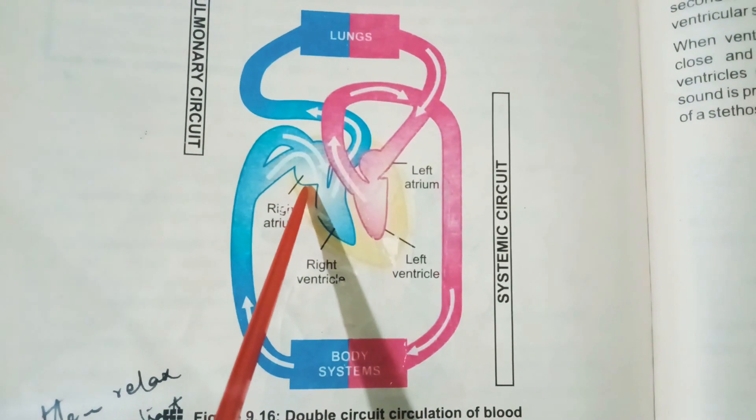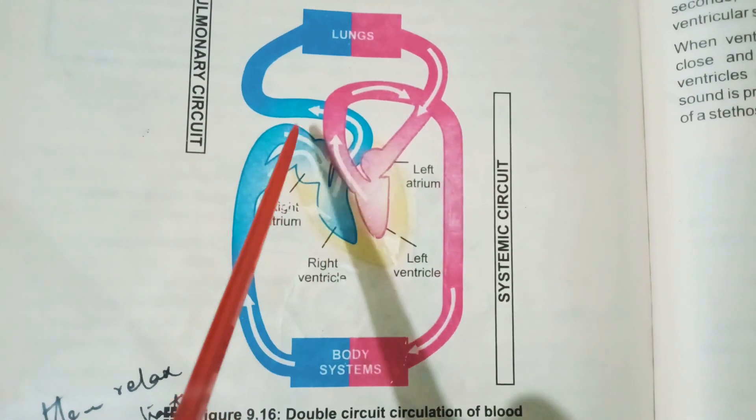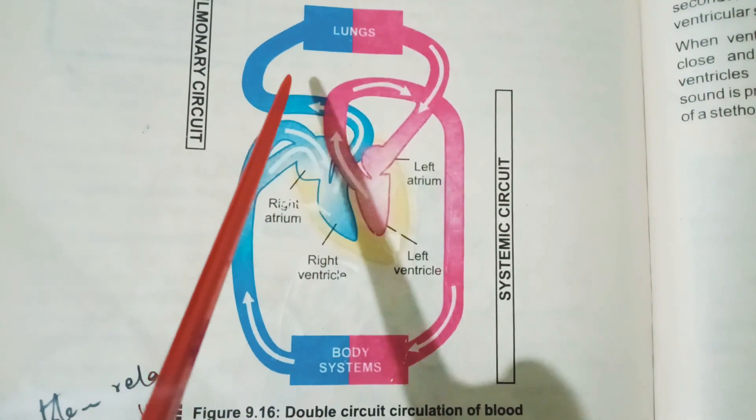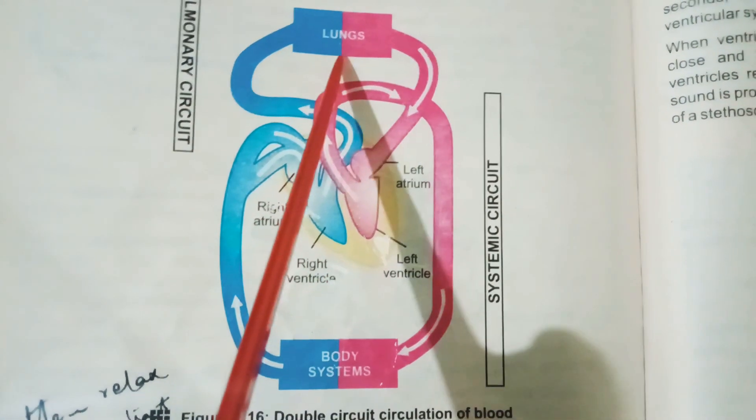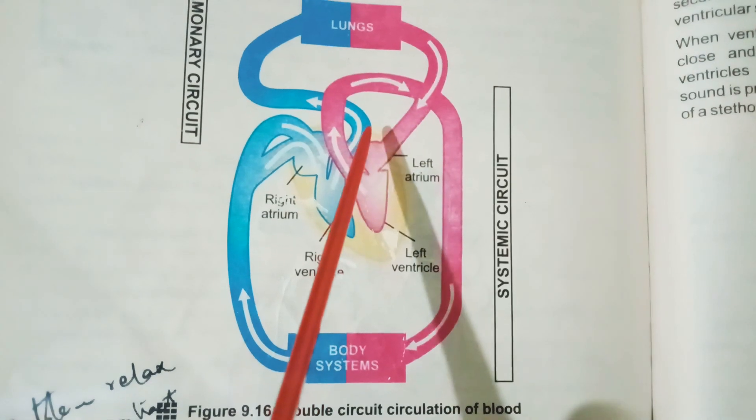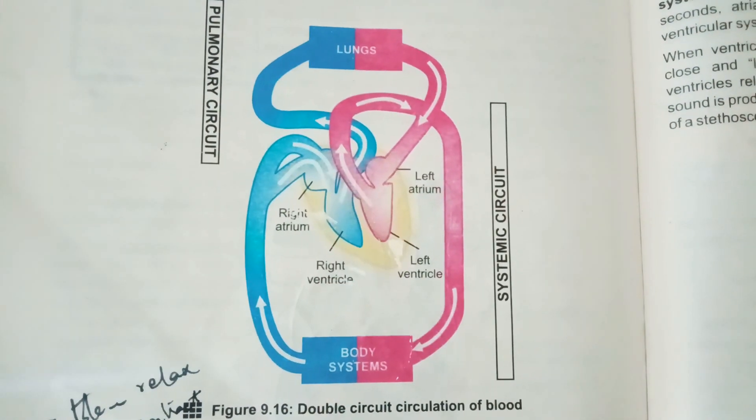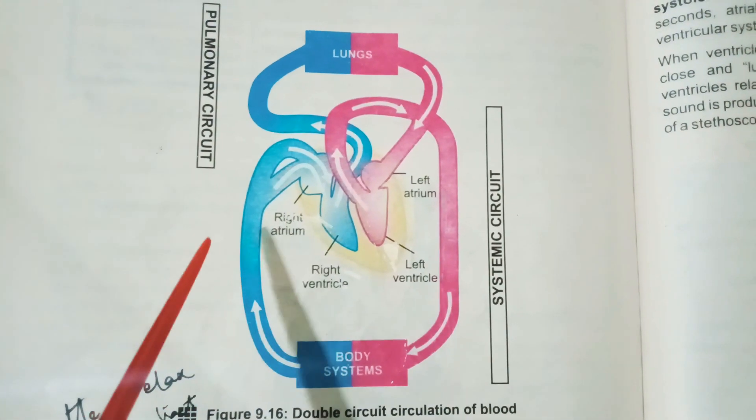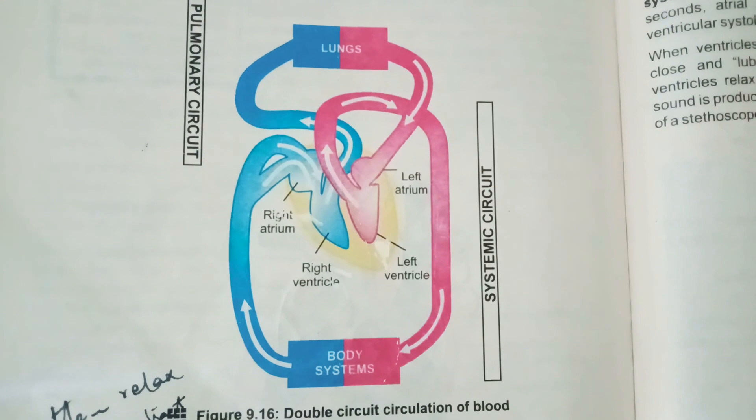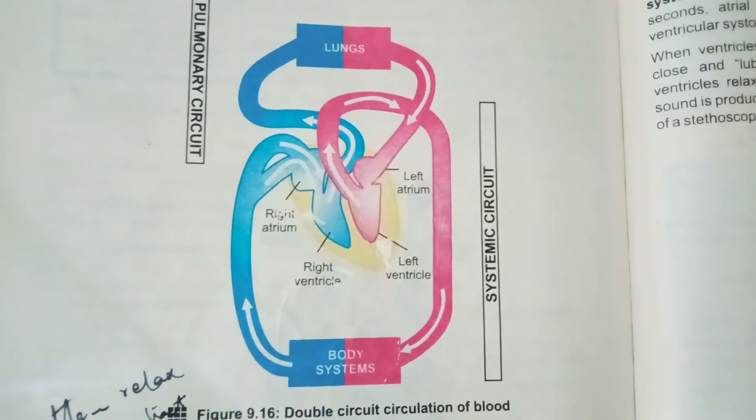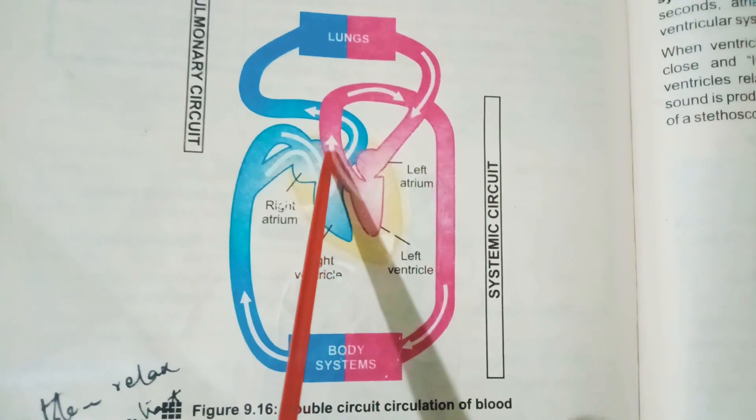The pathway on which deoxygenated blood is carried from the heart to the lungs, and in return oxygenated blood is carried from lungs to the heart, is called pulmonary circulation or circuit.